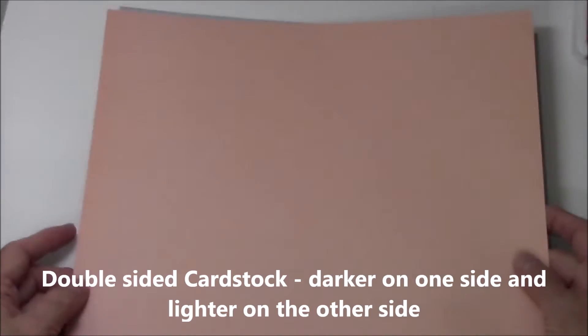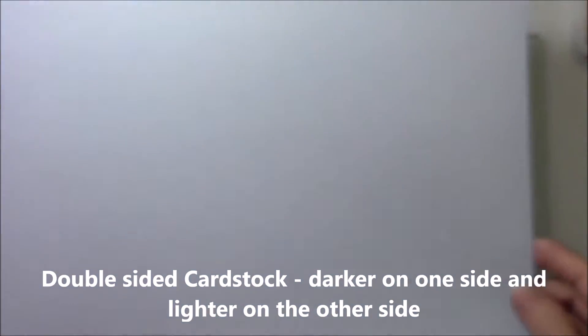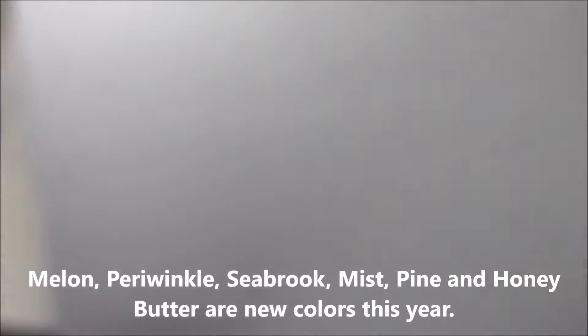So we've got the melon color, it's dark on one side and lighter on the other side. And then we have the periwinkle. This is the front side of the periwinkle, it's a kind of a bluish lavender, and then that's the lighter side. So one side's darker, one side's light. And then we have Sea Brook. That's the darker side and here's the lighter side.